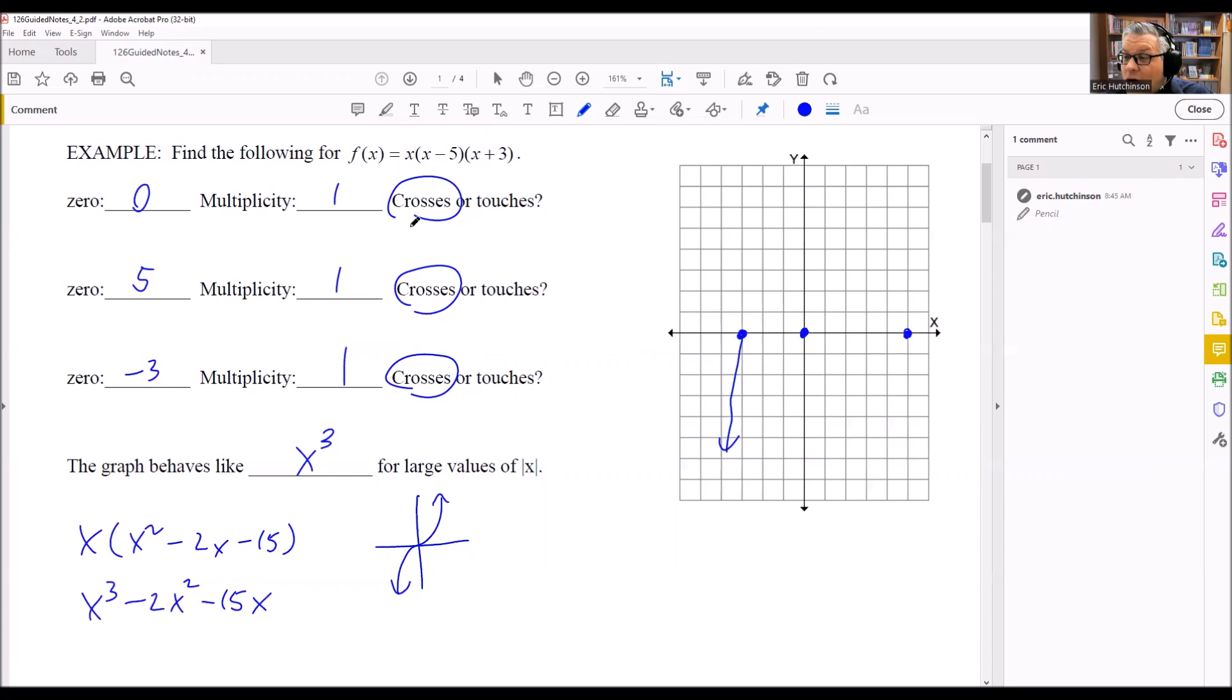Now what's going to happen is it's going to cross here, because we already determined it crosses based on the multiplicity being odd. So I know that it's going to cross here.